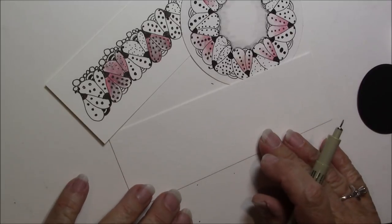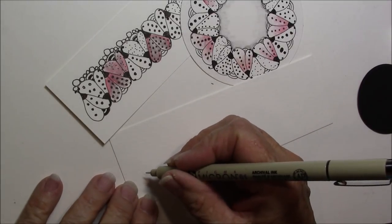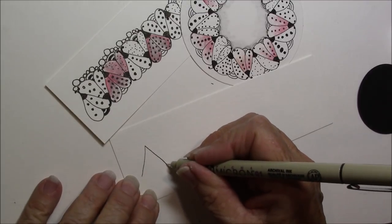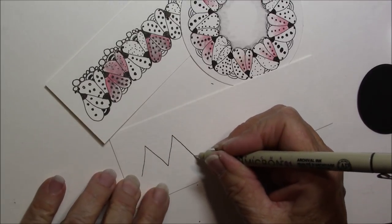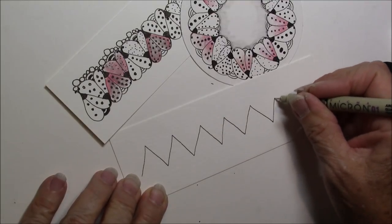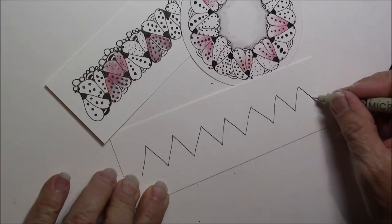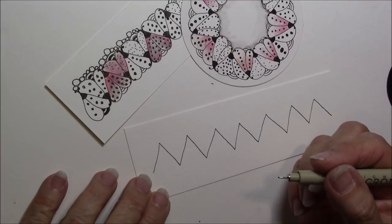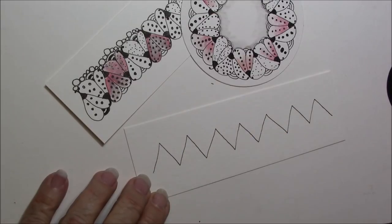So we're just going to take the bookmark and we're just going to start with a zigzag. So I go all the way down my bookmark with a zigzag.